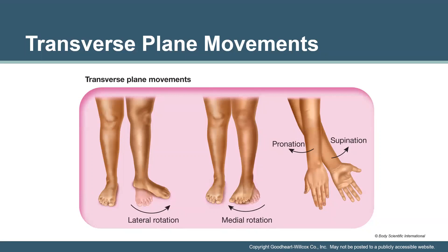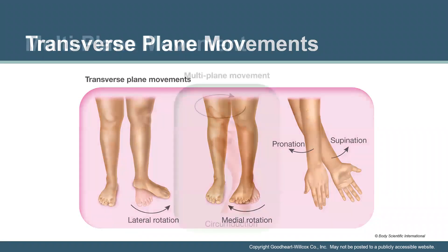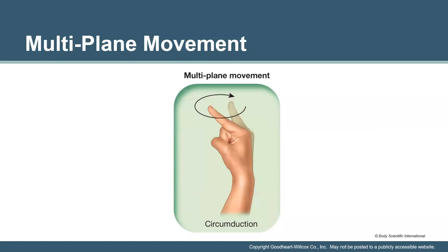You may have heard the positions prone or supine, which relate to these terms. Prone position is belly down; supine is lying on your back facing the ceiling. When we have a multi-plane type of movement, an example is circumduction — spinning in a circle — which can be done with a finger or easily with the ball-and-socket joints of the shoulders and hips.